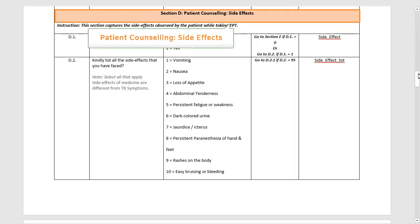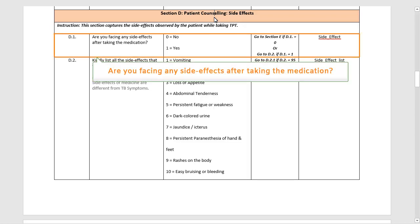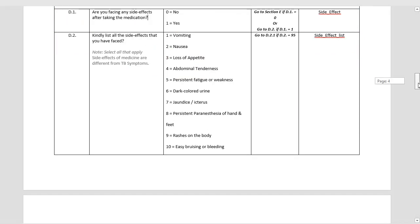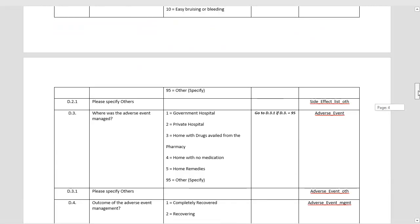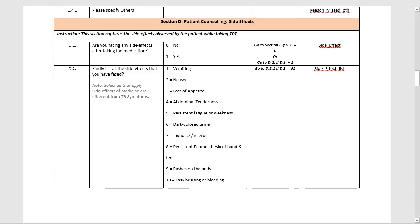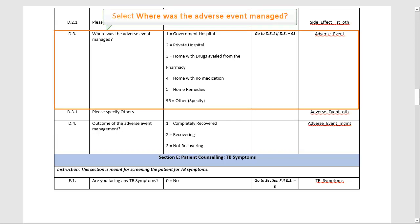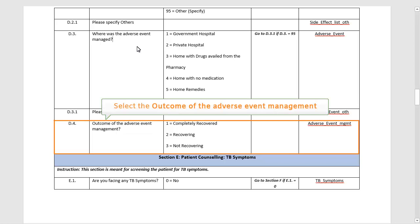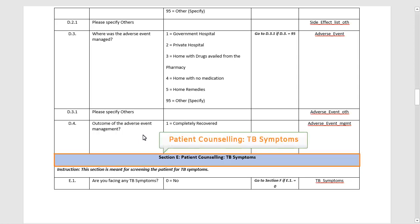The next section is titled Patient Counselling Side Effects. This section captures the side effects observed by the patient while taking TPT. The first question asks whether the patient is facing any side effects of the medication. If there are no side effects, the screen will shift to the next section titled Patient Counselling TB Symptoms. Otherwise, you have to mention where the adverse event was managed, and then select the outcome of the adverse event. On entering all the required inputs, swipe to the next section titled Patient Counselling TB Symptoms.